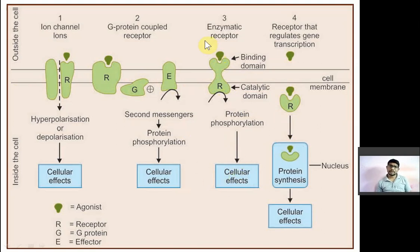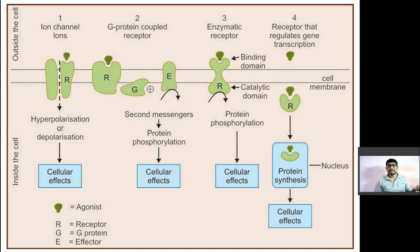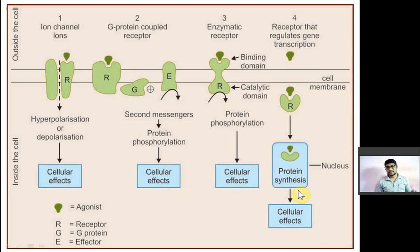Fourth type of receptor is a receptor that regulates gene transcription, also known as an intracellular receptor. Ion channels, G-protein, and enzymatic receptors are all present on the cell membrane, but intracellular receptors are present inside the cell — either in the cytoplasm or in the nucleus. Most hormonal receptors are of this type. Agonist or drug will combine with this receptor, interact with the genetic material, and cause changes in translation and protein synthesis.